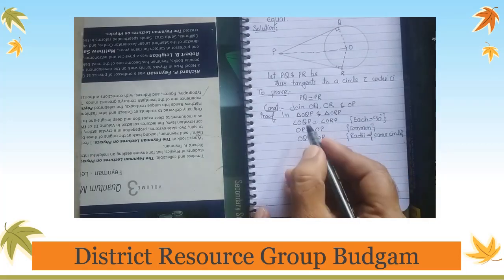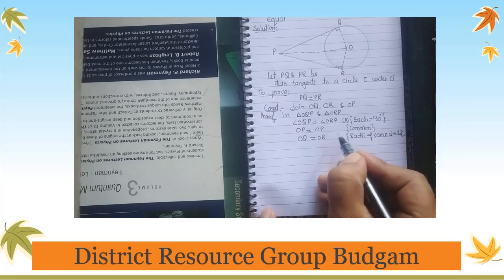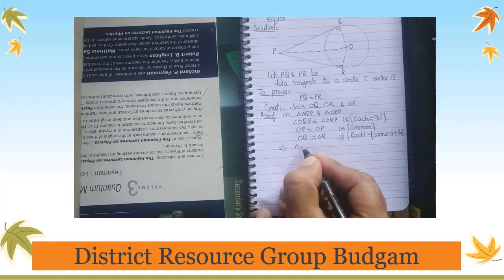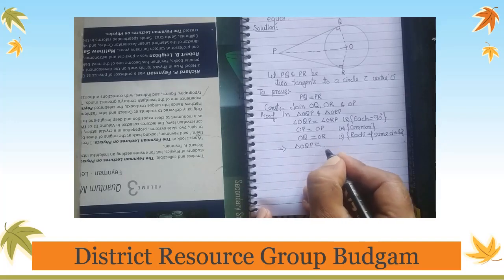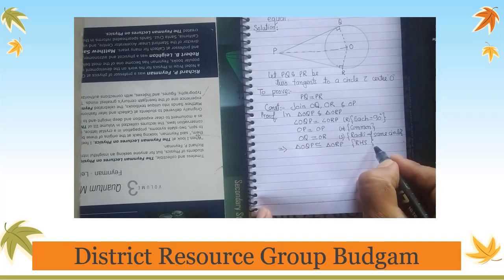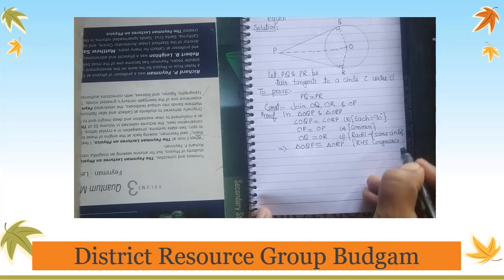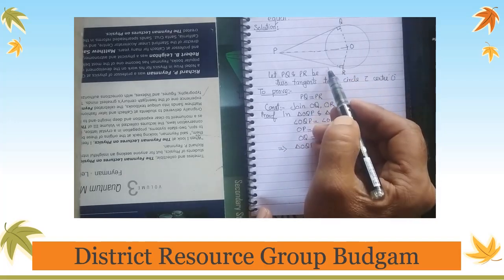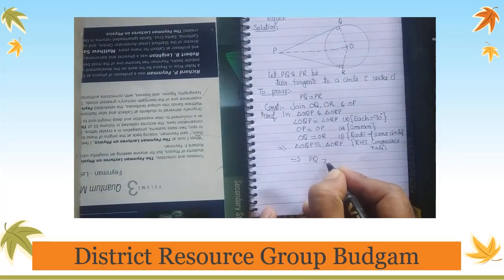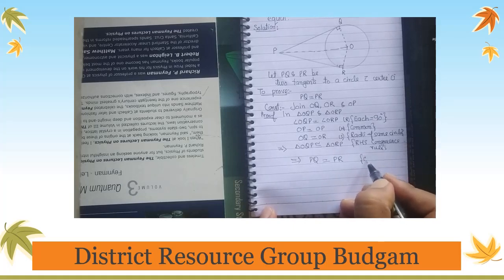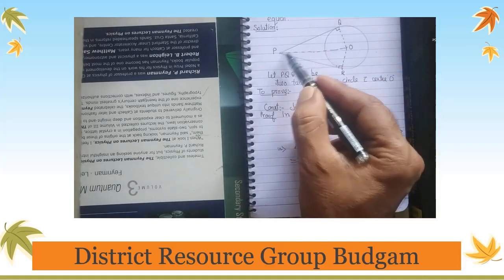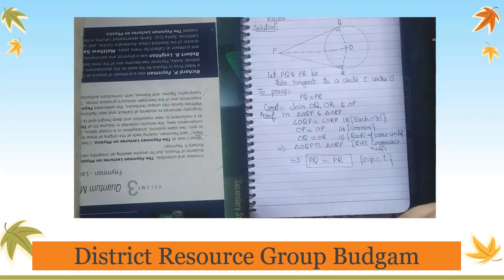In these two triangles we have shown a right angle, the hypotenuse, and one side are equal. Therefore, triangle OQP is congruent to triangle ORP by the RHS congruence rule. Since the two triangles are congruent, their corresponding parts are equal. This gives PQ = PR — which is what we had to prove: that if two tangents are drawn from an external point to a circle, they are of equal length.